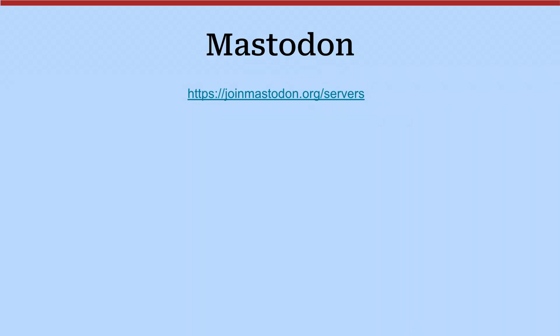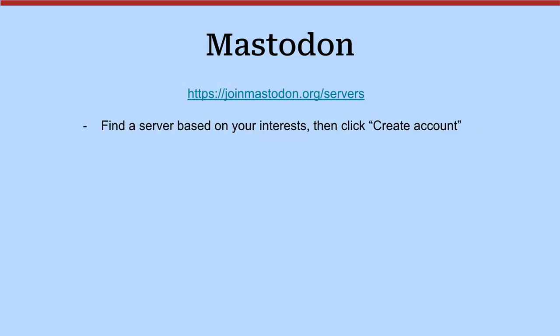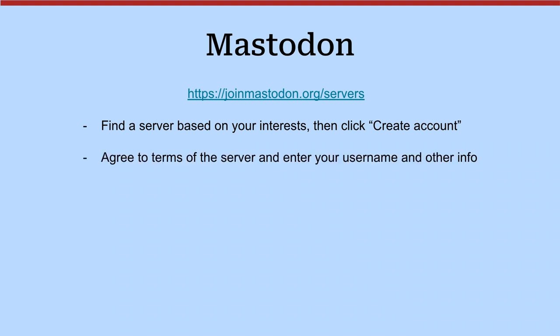At joinmastodon.org you find a server based on your interest and click create an account. They will suggest mastodon.social because that's the one the Mastodon organization runs, but you can change to any other ones. They give you five or six more general-interest servers that are well known, well maintained, and connect to a good audience. You basically agree to the terms of the server because every server admin can set their own rules. For instance, drupal.community models its rules on the Drupal code of conduct — if you can be not a jerk in Drupal, you can be not a jerk on the server.